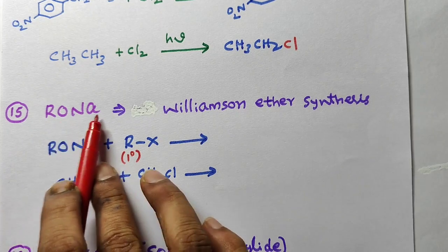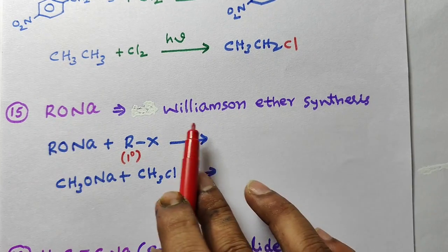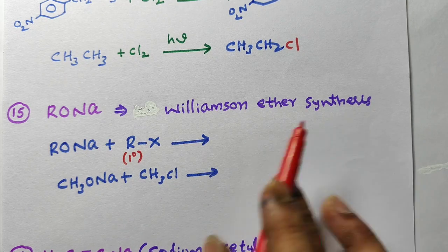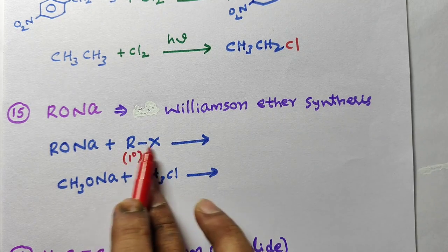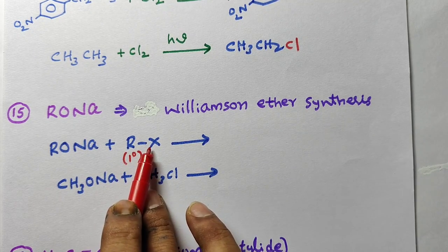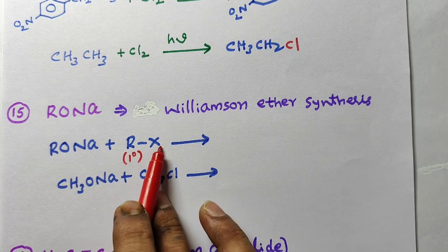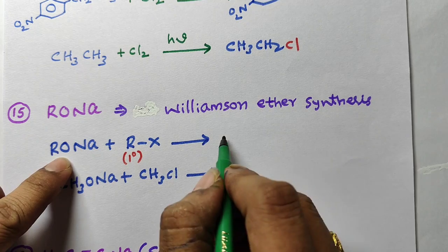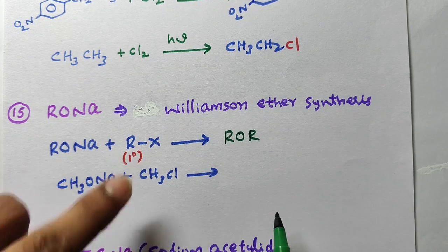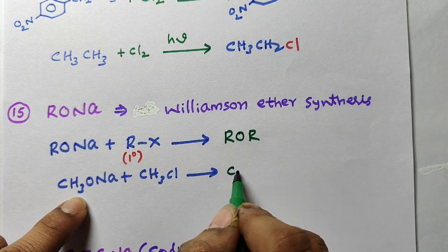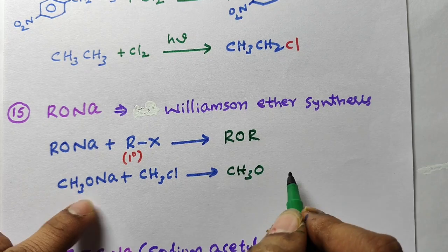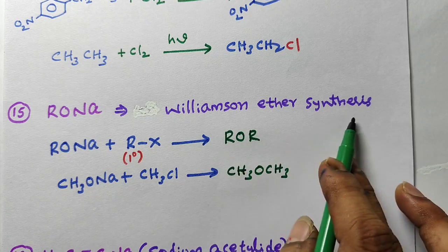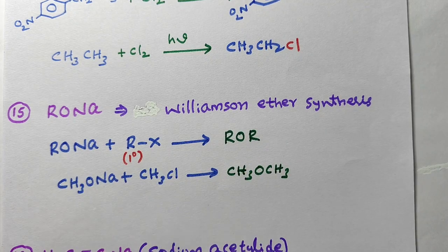Next reagent: sodium alkoxide, which is used in Williamson ether synthesis — an important named reaction. In Williamson ether synthesis, we take only primary alkyl halide; secondary and tertiary can give elimination to form alkene. RO⁻ from sodium alkoxide reacts with R-X to give an ether R-O-R. For example, CH3ONa reacts with CH3Cl to give dimethyl ether. Code to remember: RO⁻Na⁺ + RX → ether.